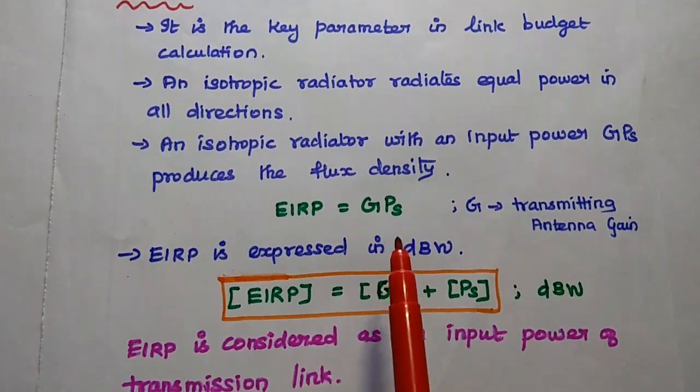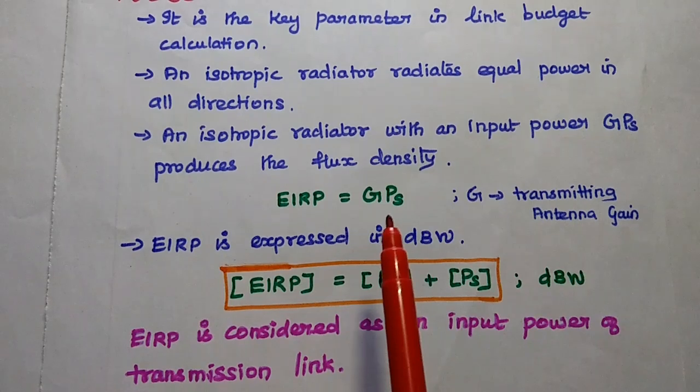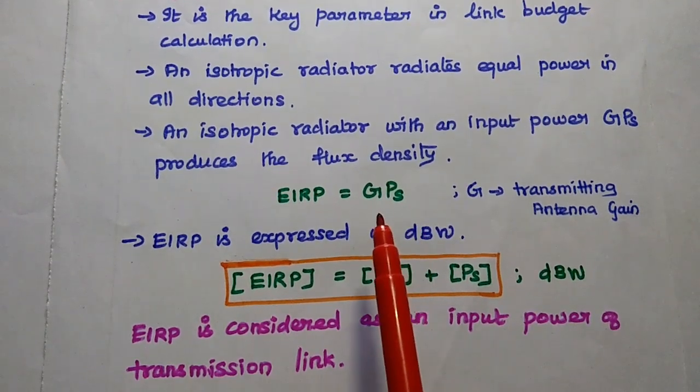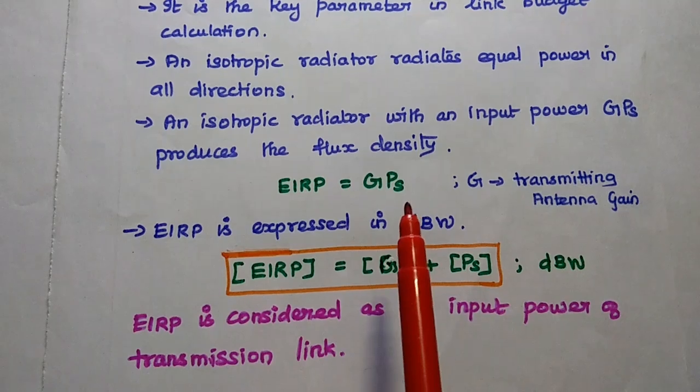Hence, it is called equivalent isotropic radiated power. That is equal to GPS. G is the transmitting antenna gain, PS is the source power.